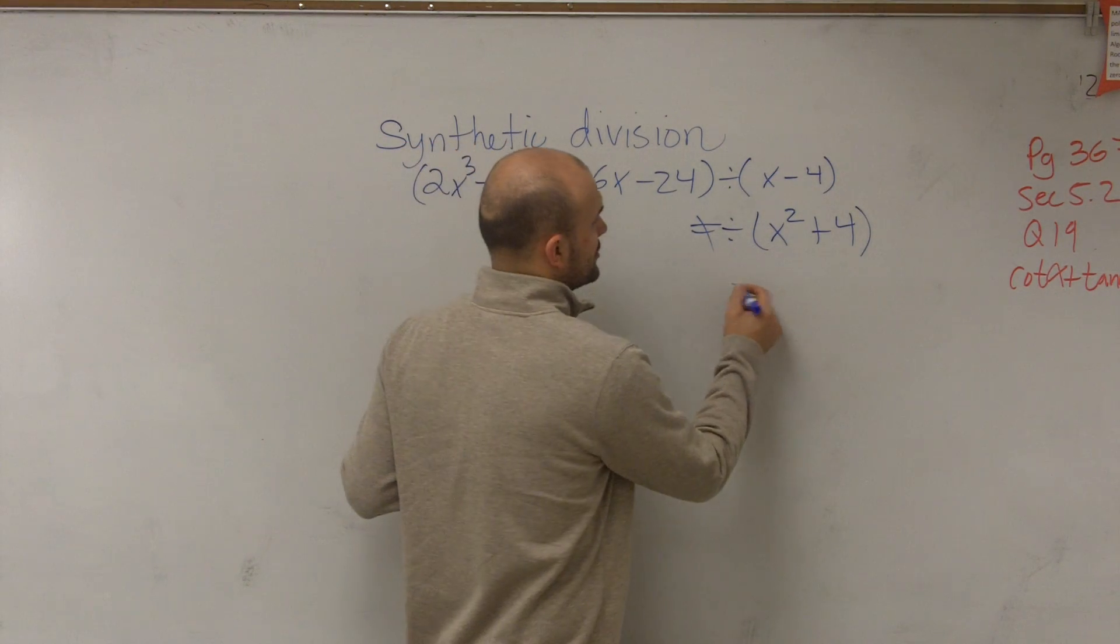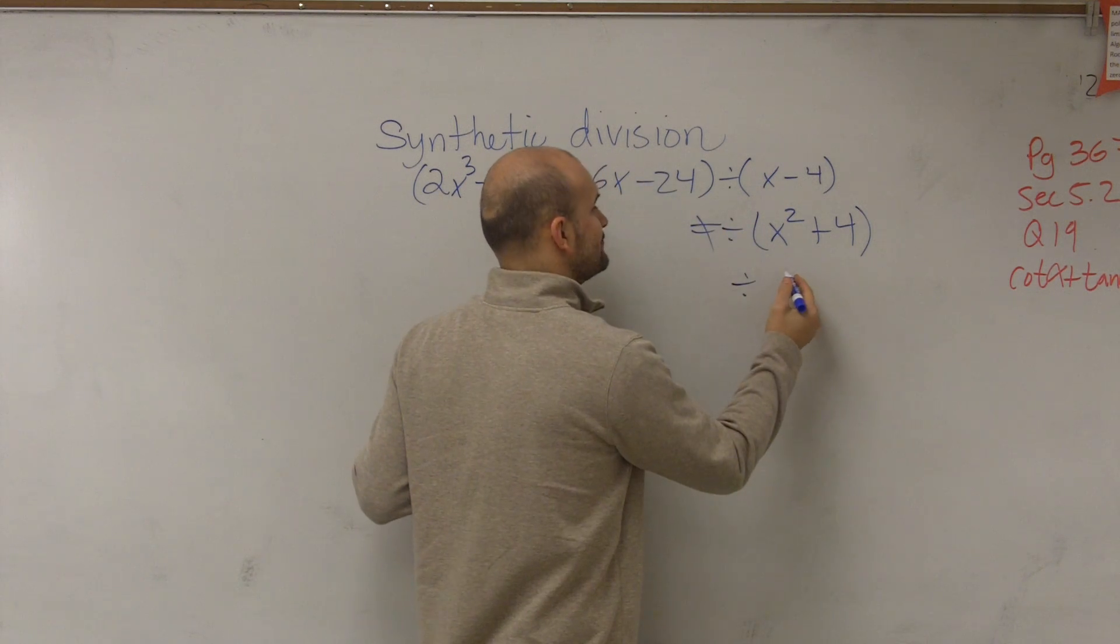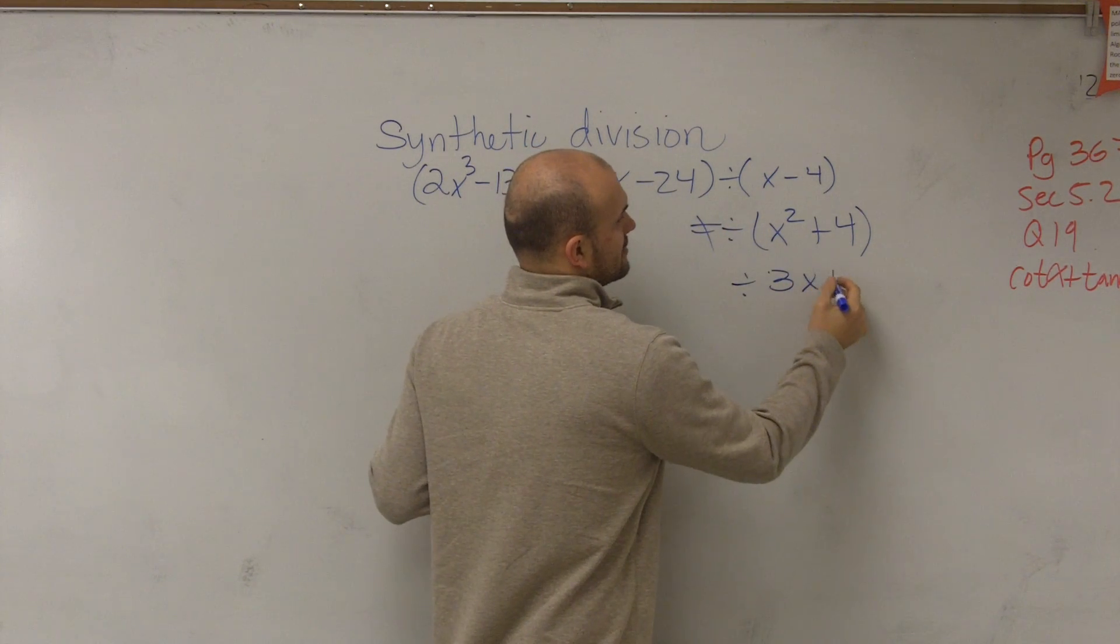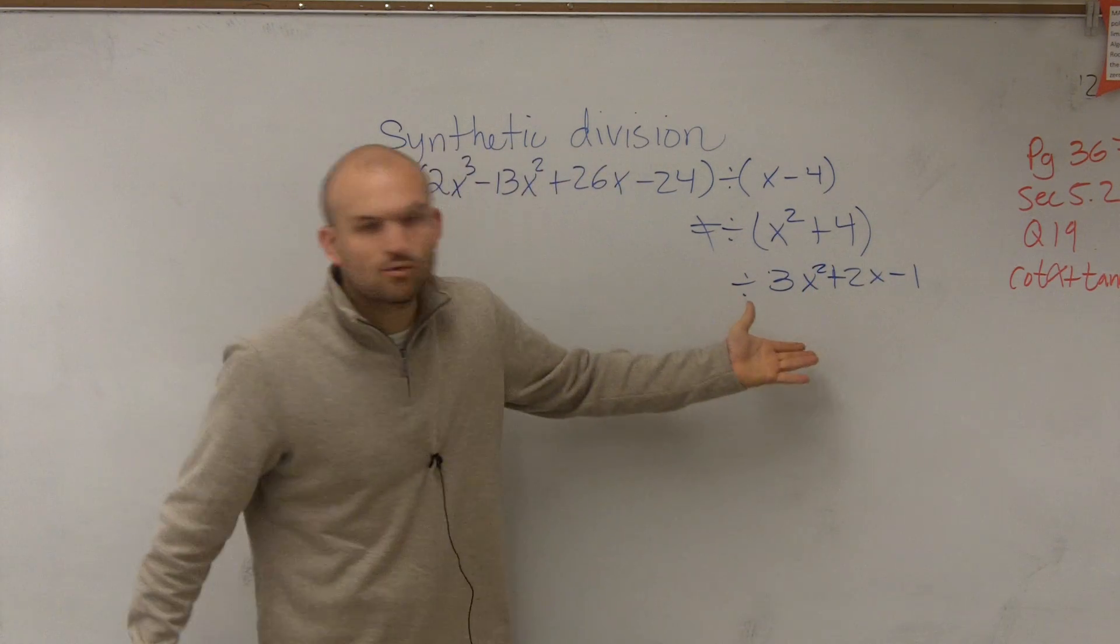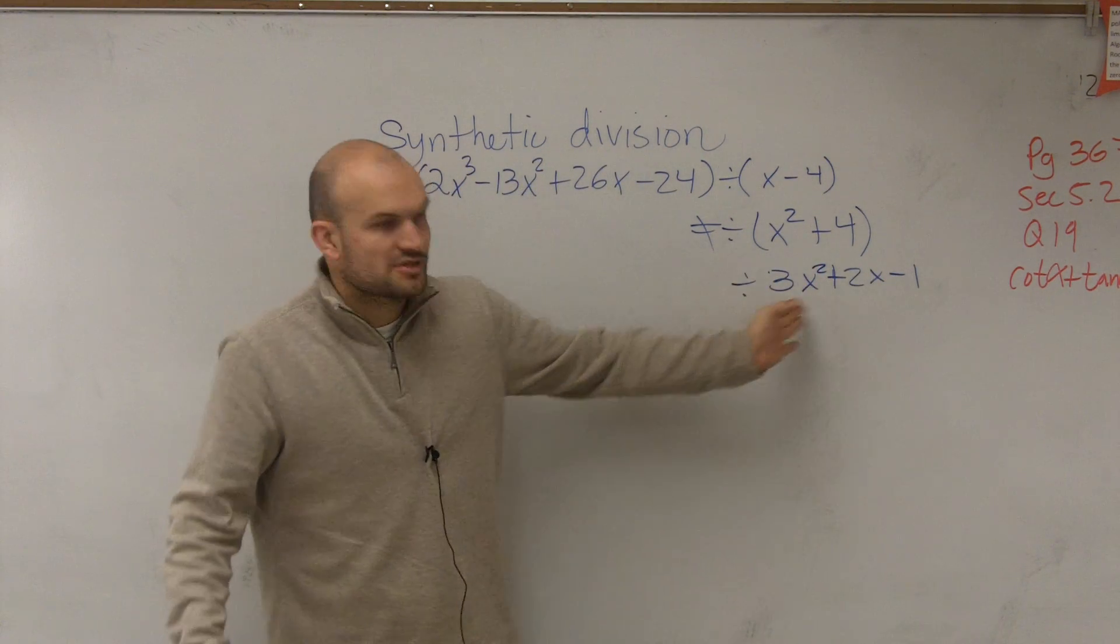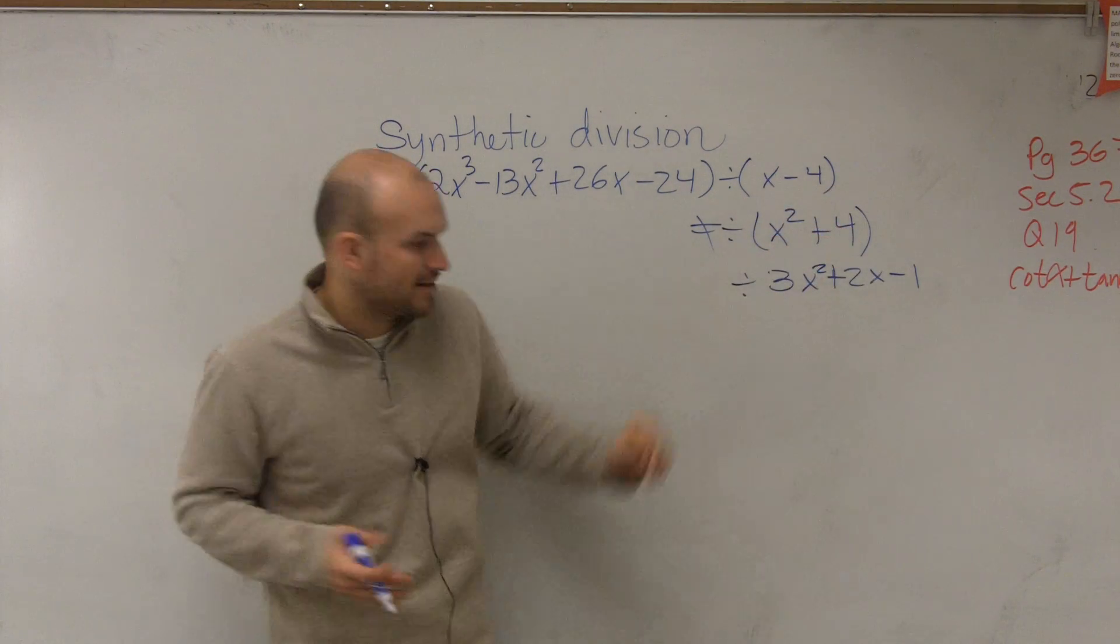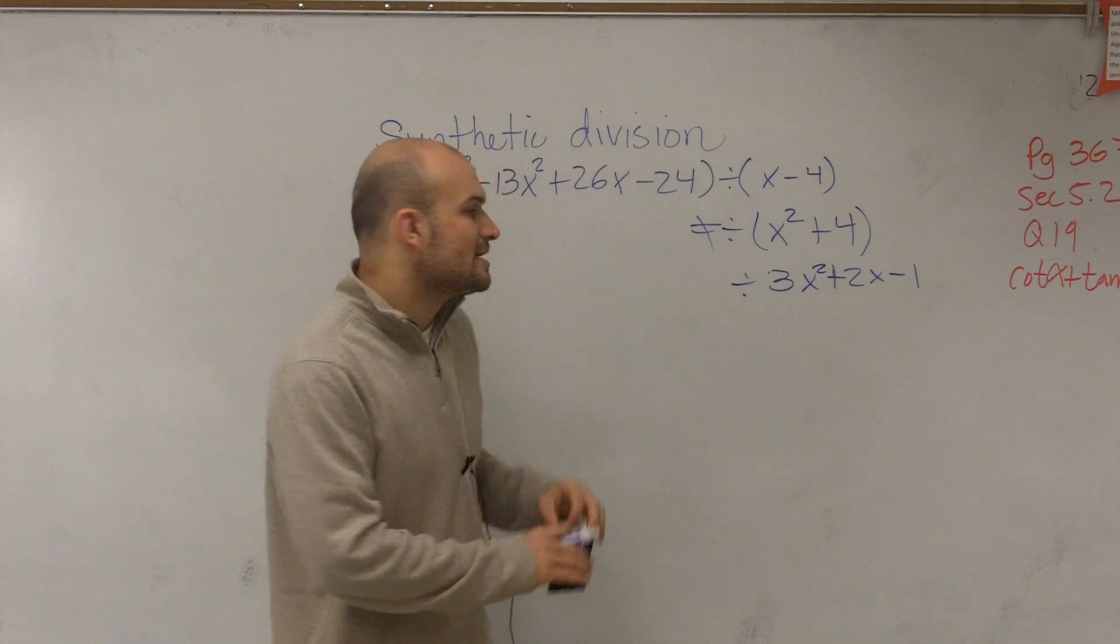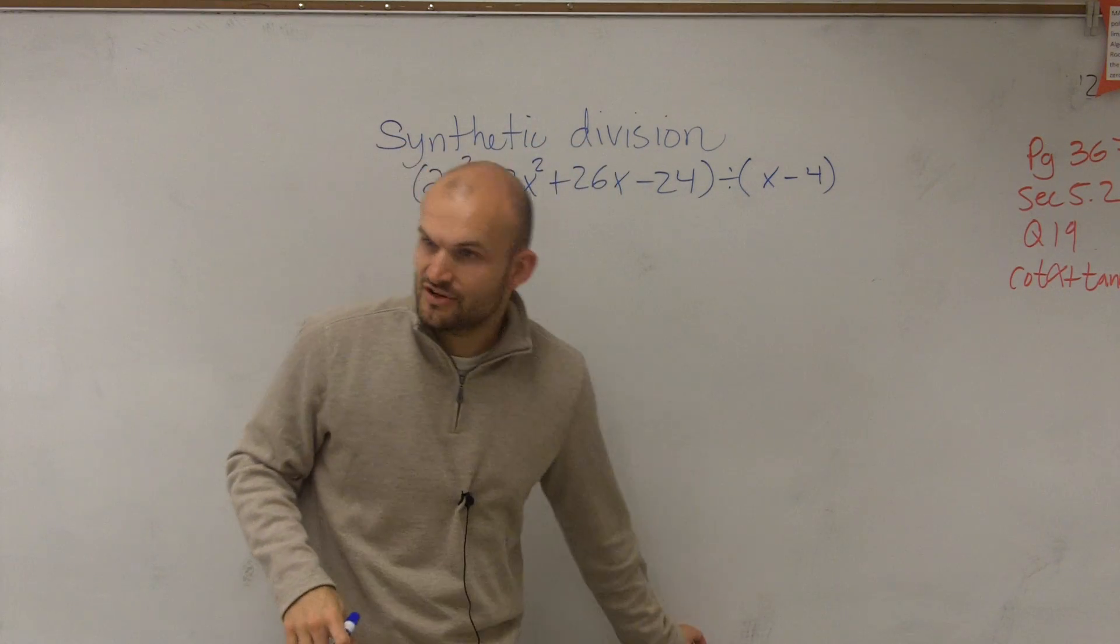You also cannot do like a 3x squared plus 2x minus 1. Again, that's quadratic, it's not linear form, and there's three terms. It has to be a linear binomial. So as long as you have it in linear form, you can divide using synthetic division.